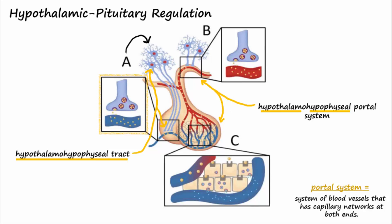The area labeled B shows the cell bodies of the neurons that will release hormones into the hypothalamohypophyseal portal system, shown in the inset for B. These hormones travel a short distance in the portal system made up of capillaries to the cells of the anterior pituitary. The hormones leave the portal circulation to find receptors on the various types of hormone-secreting cells of the anterior pituitary shown in the inset for C. The anterior pituitary cells stop or start the release of hormones into the general circulation depending on what signaling hormones have arrived from the hypothalamus.